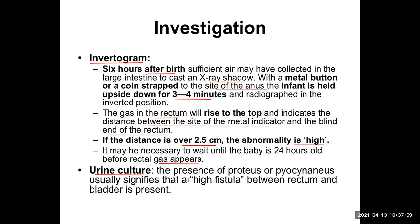The presence of Proteus or Pseudomonas in urine culture usually signifies that a high fistula between the rectum and bladder is present. Pseudomonas aeruginosa produces a particular pigment called pyocyanin — that's why the name is given. E. coli may also be important here.